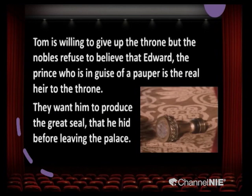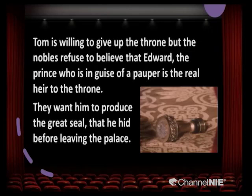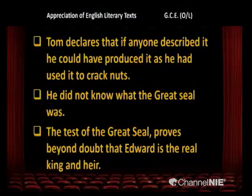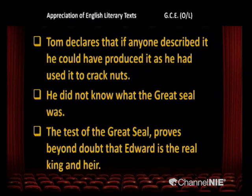That is the Great Seal of England. Tom is willing to give up the throne but the nobles refuse to believe that Edward, the prince in the guise of a pauper, is the real heir to the throne — again you can see people judge others by their clothes. They want him to produce the Great Seal that he hid before leaving the palace. Tom declares that if anyone described it he could identify it, as he had used it to crack nuts. He did not know what the Great Seal was, that is why he used it to crack nuts. The test of the Great Seal proves beyond doubt that Edward is the real king and heir.